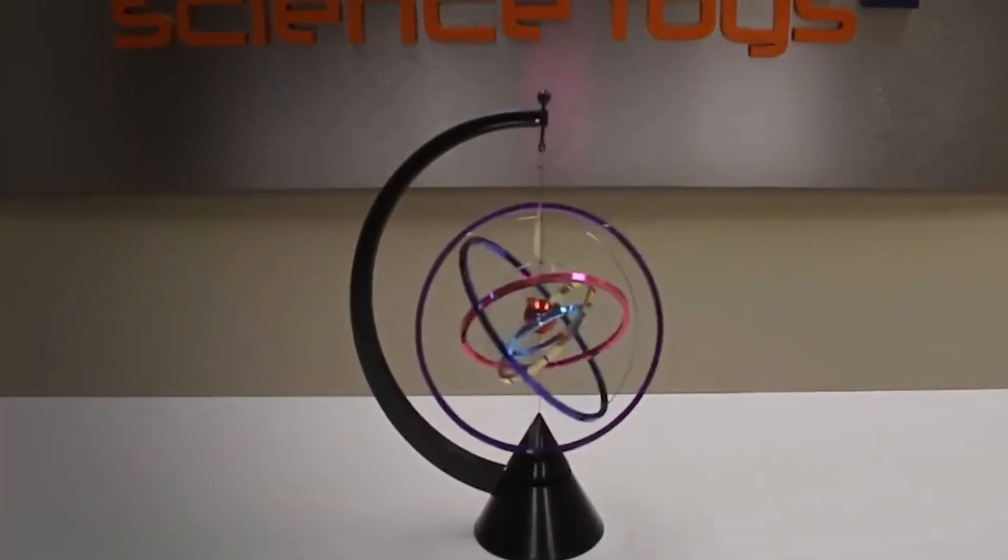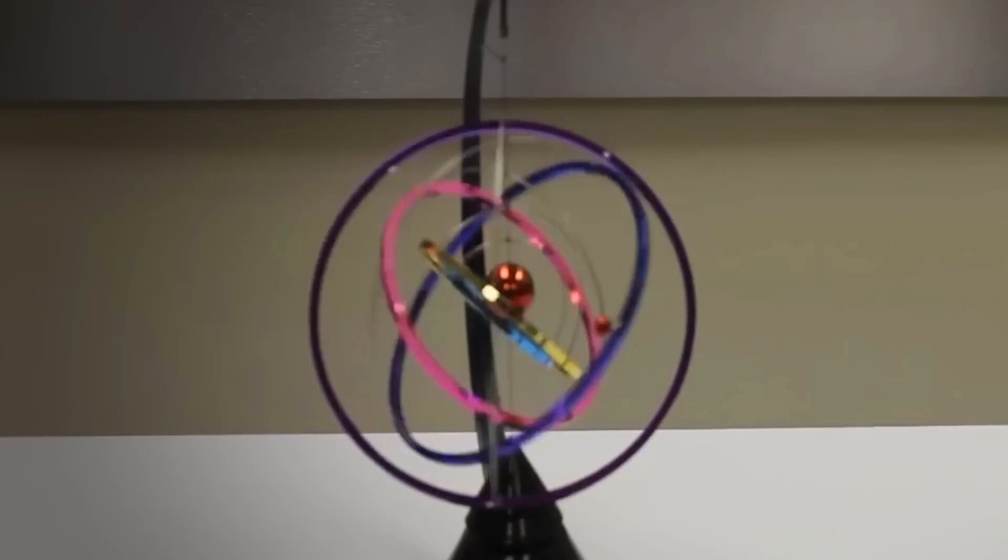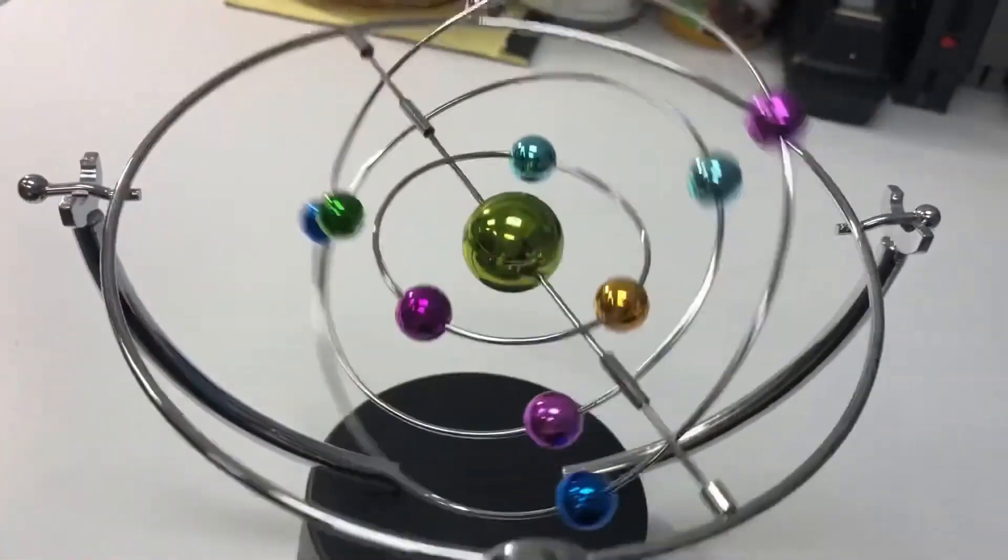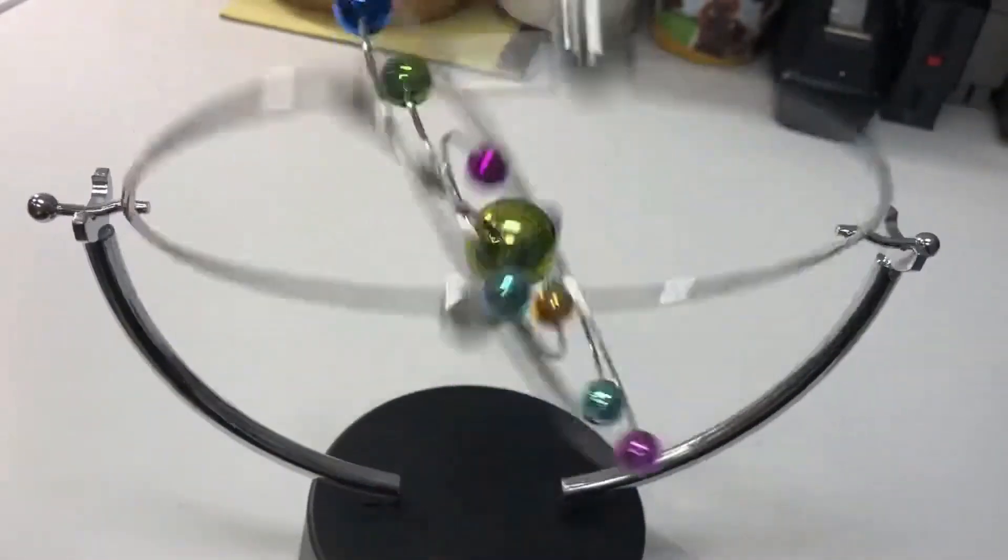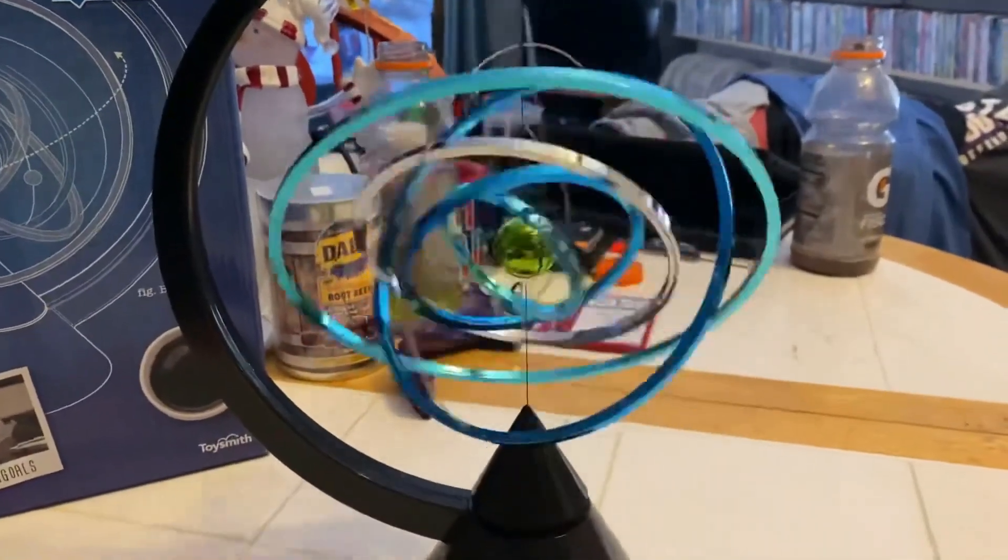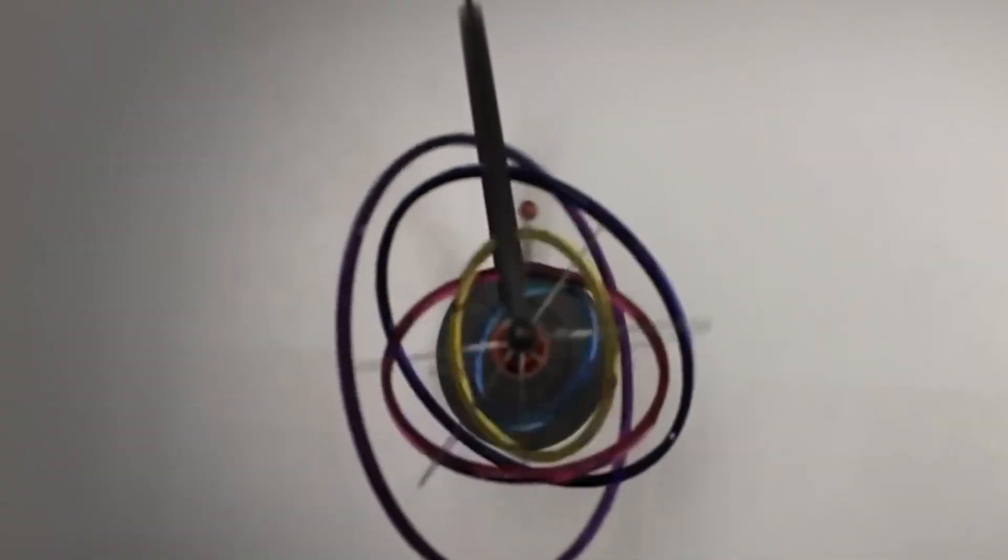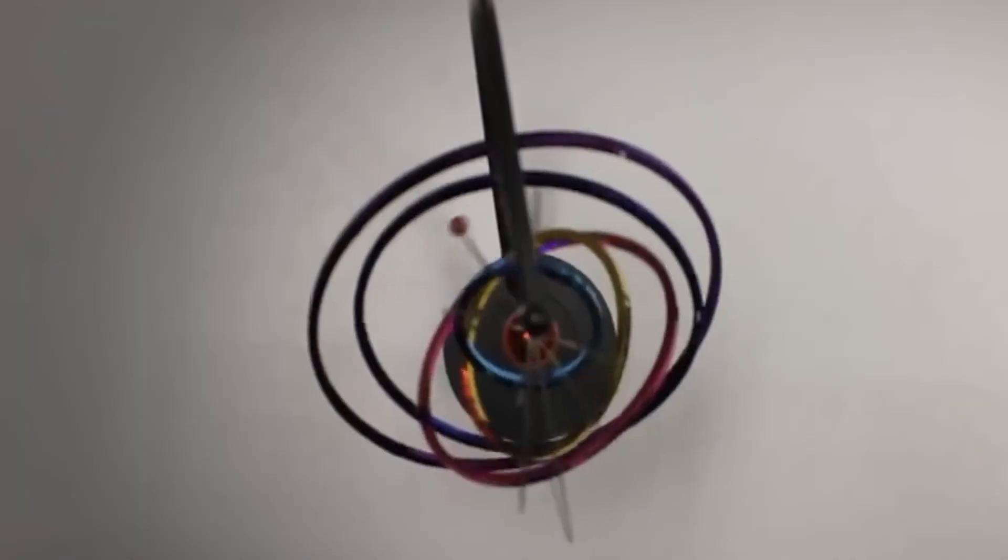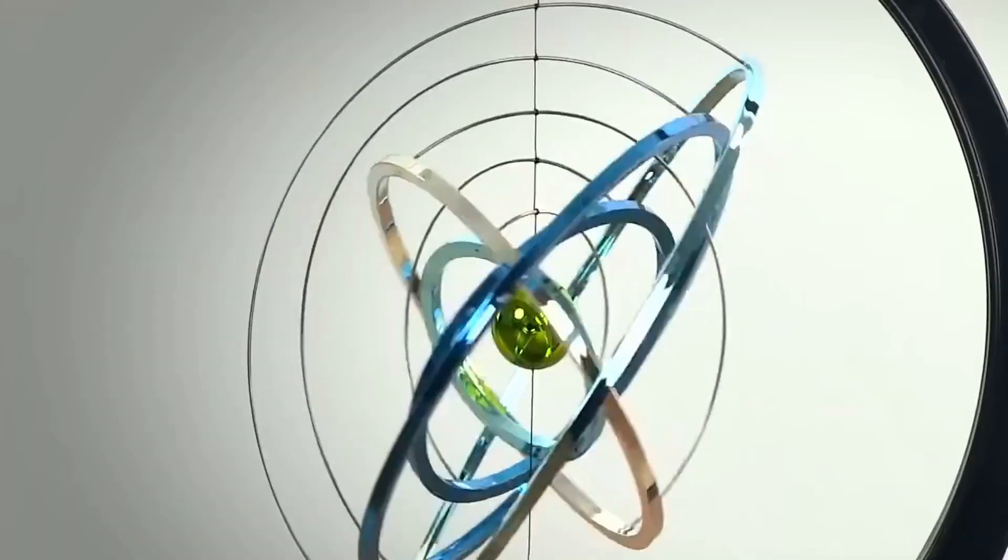This mesmerizing sculpture uses the principles of electromagnetism to keep its rings spinning. A hidden electromagnet in the base is powered by batteries, which periodically creates a magnetic field. This field gives a tiny, precisely timed push to a magnet located in the spinning part of the sculpture. That small impulse is just enough to counteract the energy lost to air resistance and friction, allowing the rings to orbit each other endlessly in a silent, cosmic ballet.